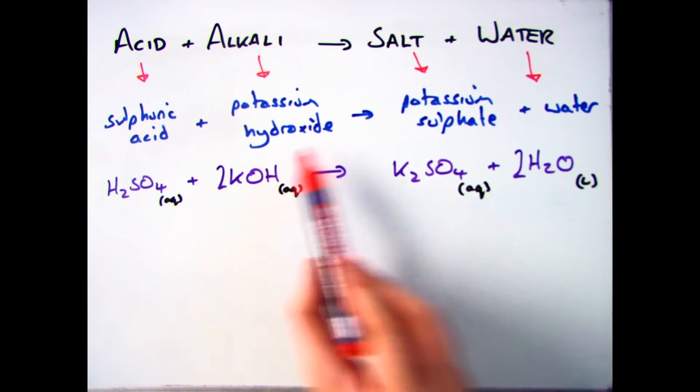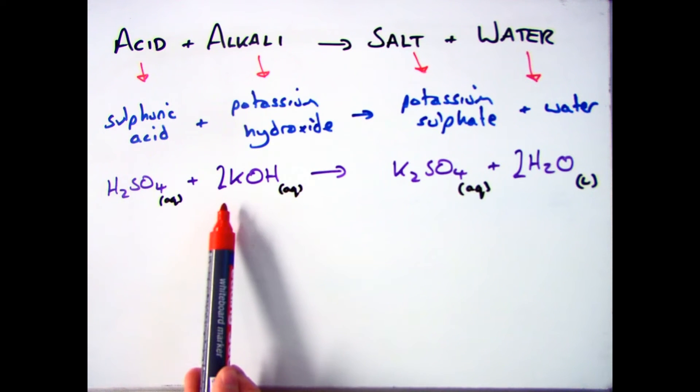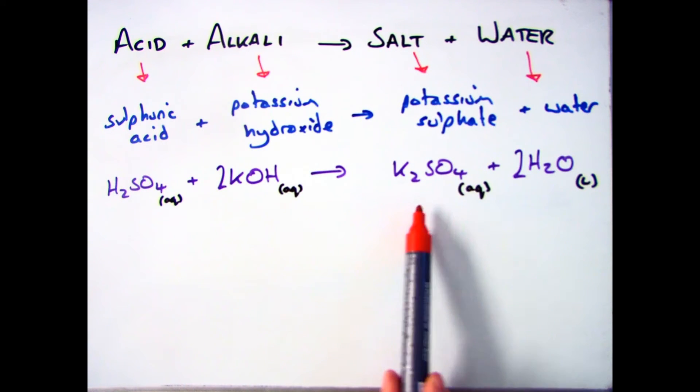If we have a look at this one here, where sulfuric acid reacts with potassium hydroxide to make potassium sulfate in water, you can have a look at the balance symbol equation, which I've written in here, and then you can break it down.